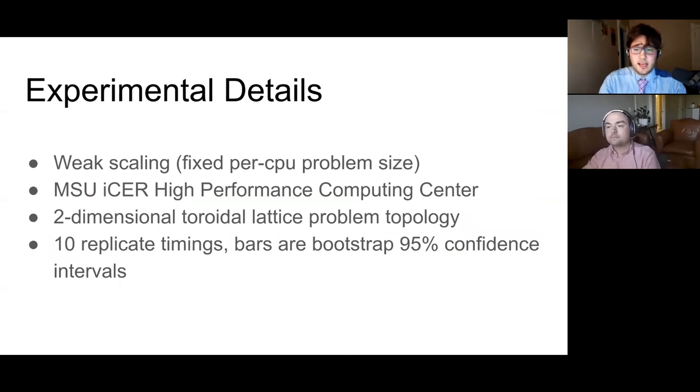Some experimental details. These problems are all weakly scaled. This means that there's a problem size that's fixed for each CPU. They were run on MSU's high performance computing center and the problem topology is set to the Torus. You'll see the graphs are 10 replicate timings and the bars on them are bootstrap 95% confidence intervals.